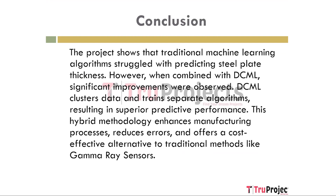In conclusion, the project demonstrates that traditional machine learning algorithms alone did not achieve satisfactory accuracy in predicting steel plate thickness. However, when combined with the novel clustering-based algorithm DCML, significant improvements in accuracy were observed. DCML's ability to cluster similar data and train separate ML algorithms on each group led to superior predictive performance. The hybrid methodology has the potential to enhance the manufacturing process, reduce errors, and offer a cost-effective alternative to costly traditional methods like gamma ray sensors.